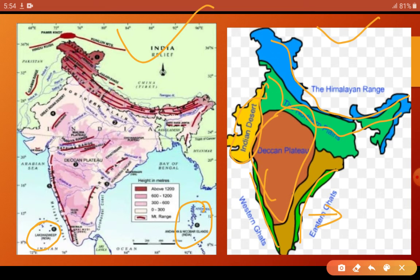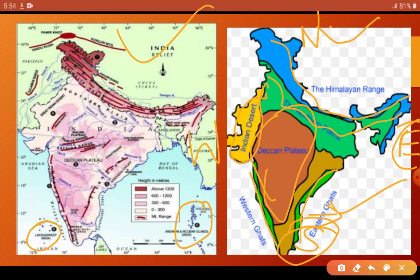When we talk about the map, you should know the directions. Many students don't know the directions. The directions are east, west, north, and south. Knowing directions will make the map very clear and help you understand how we denote physical features on the map.